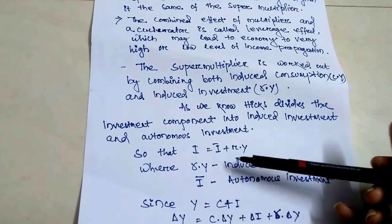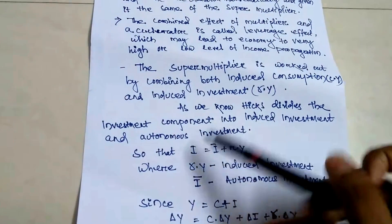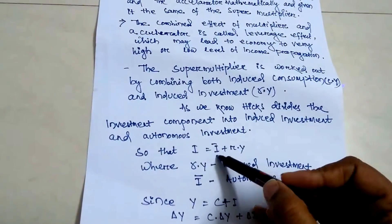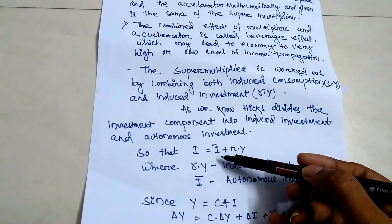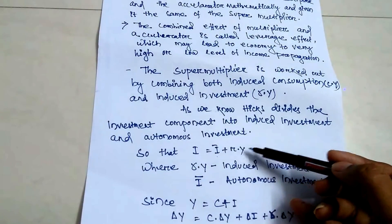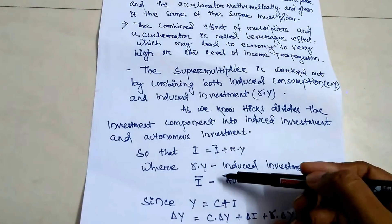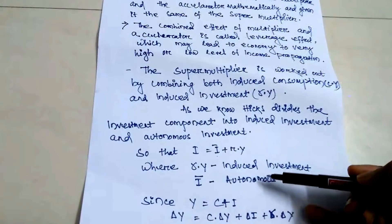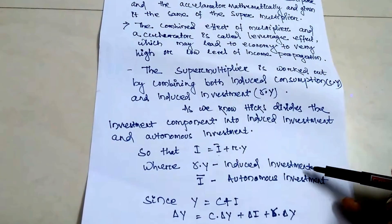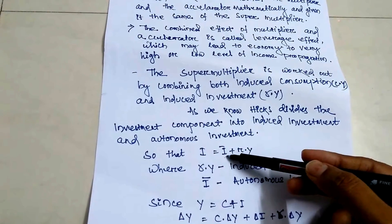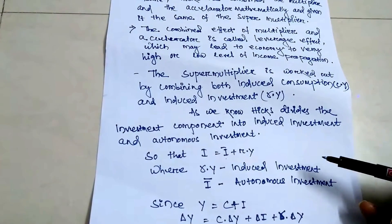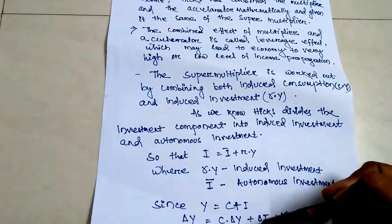Now we see the formula of the super multiplier. Investment I is equal to autonomous investment plus r into Y, where r into Y equals induced investment and the other term is autonomous investment.